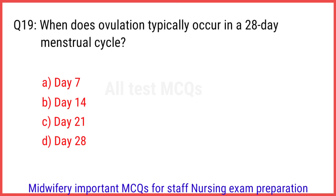Q19. When does ovulation typically occur in a 28-day menstrual cycle? The right answer is option B: Day 14.